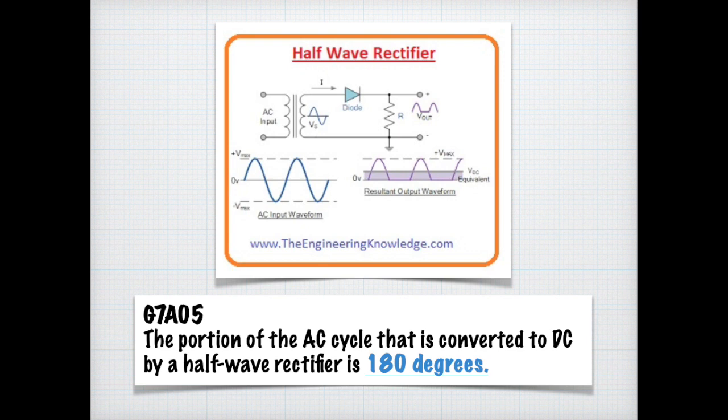So if a full wave is 360 degrees, a half wave can only be 180 degrees. For the exam, just know that the portion of the AC cycle that is converted to DC by the half wave rectifier is 180 degrees.